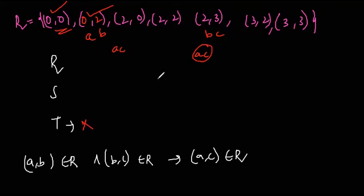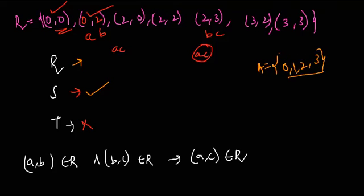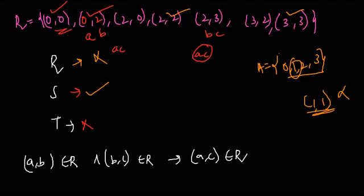For symmetric: (0,0) has (0,0); (0,2) has (2,0); (2,0) has (0,2); (2,2) is there; (2,3) has (3,2); and (3,3) is there. So it is symmetric. But for reflexive, on set A = {0, 1, 2, 3} we have (0,0), (2,2), and (3,3), but (1,1) is not in the relation. So it is not reflexive. Therefore this relation is neither reflexive nor transitive — it is only symmetric. So it is not an equivalence relation. This concludes the topic of equivalence relation.